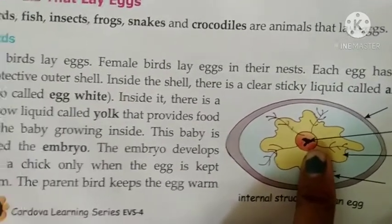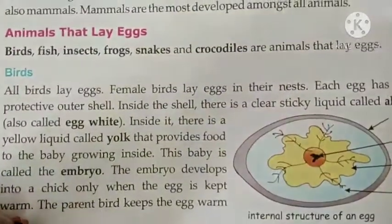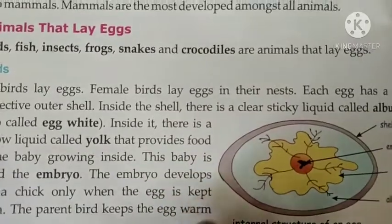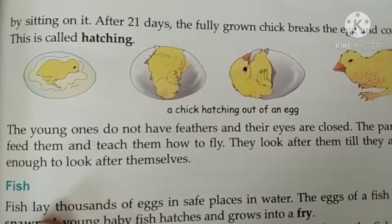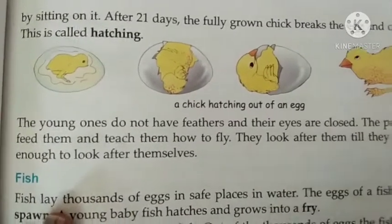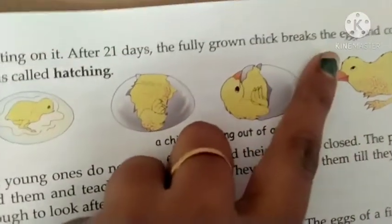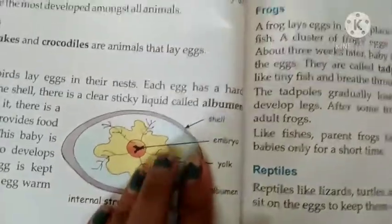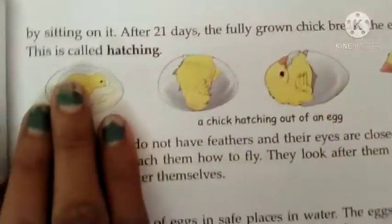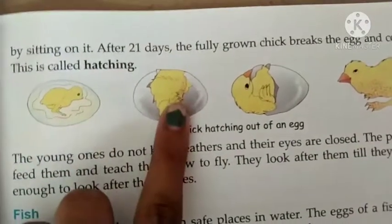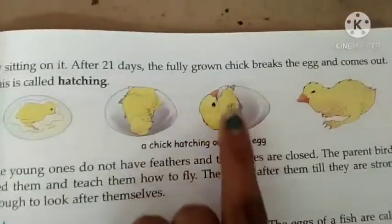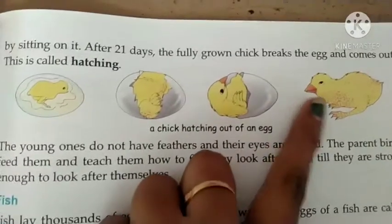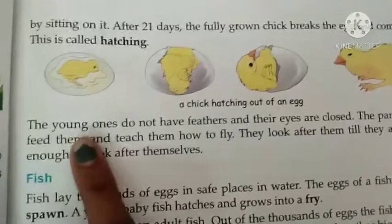The embryo develops into a chick only when the egg is kept warm. The parent birds keep the egg warm by sitting on it. After 21 days, the fully grown chick breaks the egg and comes out. This process is called hatching. The embryo forms, the parents keep it warm for 21 days, and then the chick hatches out.